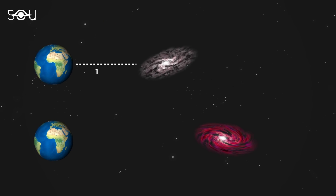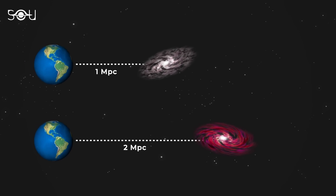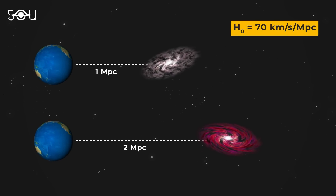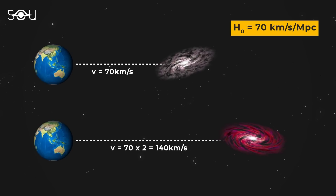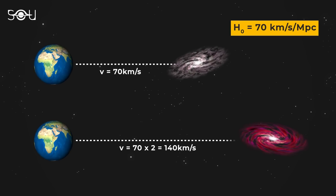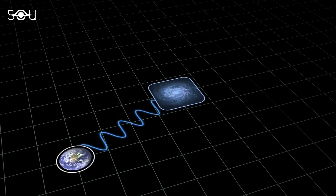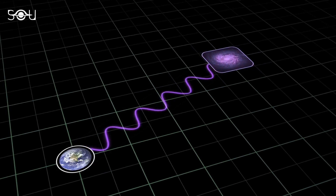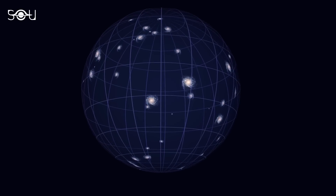Galaxy B is two megaparsecs away. If the value of the Hubble constant is 70 km per second per megaparsec, then Galaxy A would be receding from us at a speed of 70 km per second. Galaxy B, being twice as far, would be receding at 140 km per second — since it's two megaparsecs away, we multiply 2 by 70 km/s/Mpc. This expansion is not due to galaxies physically moving through space, but rather to space stretching itself. In essence, the Hubble constant tells us how fast the universe is expanding.